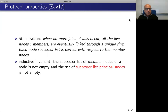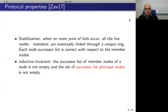Concerning the protocol liveness properties, the main property is the stabilization, and the stabilization is stated as follows. When no more joins or fails occur, all the live nodes — that is the members — are eventually linked through a unique ring. Each node's successor list is correct with respect to the member nodes. Pamela Zeiff has also stated the main inductive invariant: the successor list of member nodes of a node is not empty, and the set of successor list of principal nodes is also not empty.